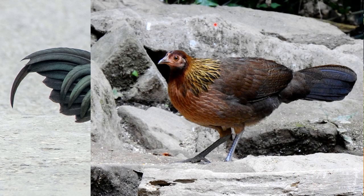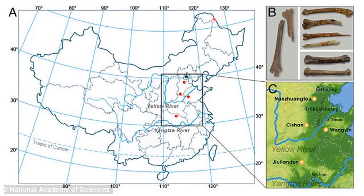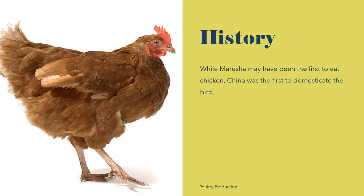The hen is rusty brown with a speckled neck and minimal comb. The researchers analyzed the fossilized chicken bones, illustrated here on the top right, from four locations around north and east China, with the oldest being found at the Nanzuangtu archaeological site near the Yellow River. While Maresha in Israel may have been the first to eat chicken, China was the first to domesticate the bird. Domestic chickens sold in supermarkets today still contain the same genetic elements in the mitochondrial DNA as the birds that were domesticated in northern China more than 10,000 years ago.